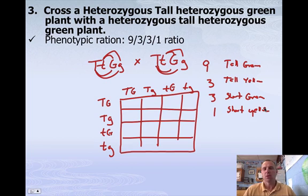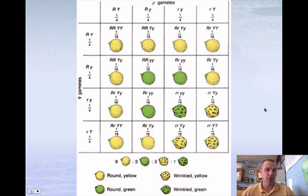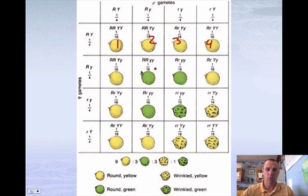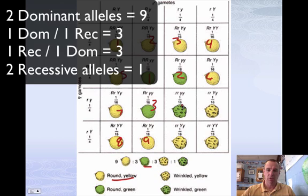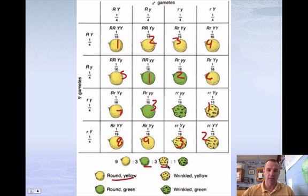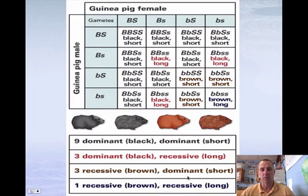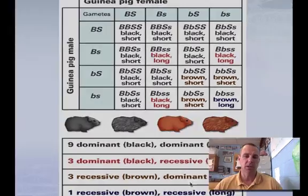This makes sense because we should have the least amount where it has both recessive alleles, and the most where it has a dominant allele. You can see nine that are round and yellow — both dominant traits — three that are round and green, three that are wrinkled and yellow, and one that has both recessives. Here's one more example showing you with guinea pigs. I hope this helps you with di-hybrid crosses — if not, please don't hesitate to ask me. Hope you all have a wonderful day.